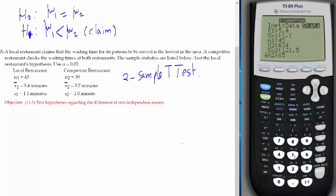X2 bar is 5.7. S2 is 1. N2 is 50. Scroll down, choose the alternative. The alternative is less than, as you noticed.